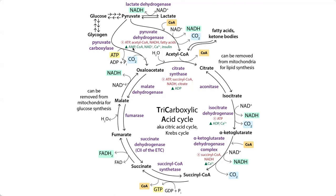Pyruvate dehydrogenase is going to be activated by AMP, which is an even more sensitive indicator of low energy than ADP. AMP is also able to activate AMP-activated kinase, which can phosphorylate and regulate many different proteins involved in energy regulation. So the low energy state stimulates these pathways, and the high energy state inhibits them. We also want to think about NADH — NADH and NAD+ are going to regulate many of these enzymes. Many of these steps had in common that they were generating NADH: pyruvate dehydrogenase, isocitrate dehydrogenase, and alpha-ketoglutarate dehydrogenase complex all generate NADH.